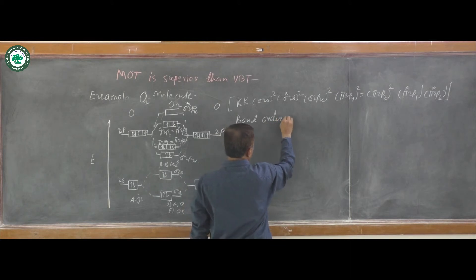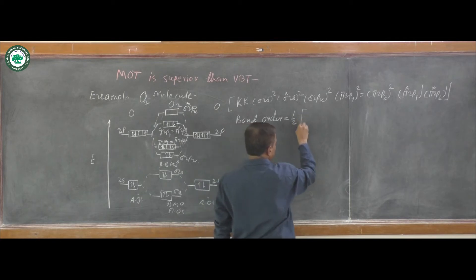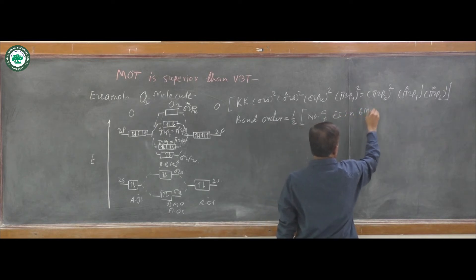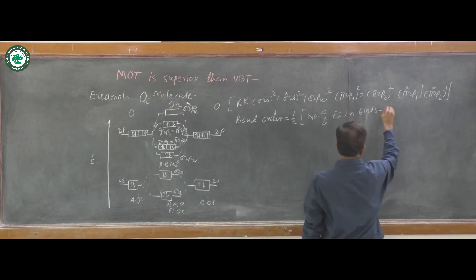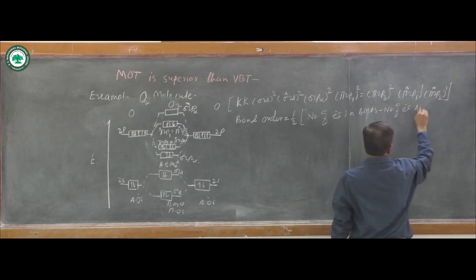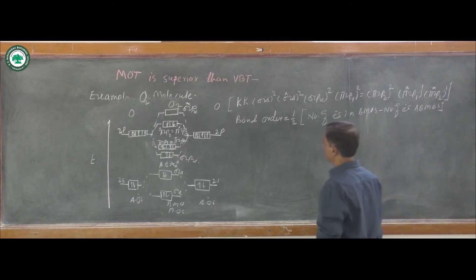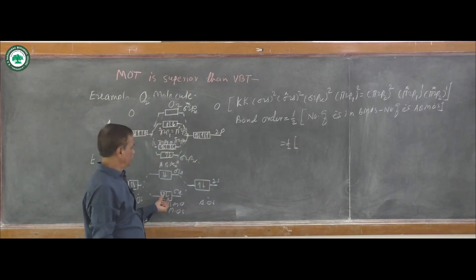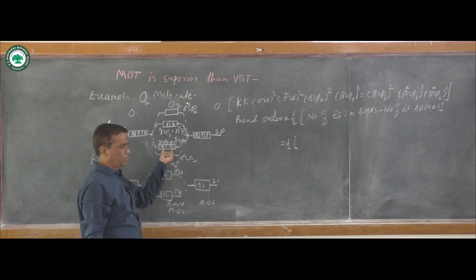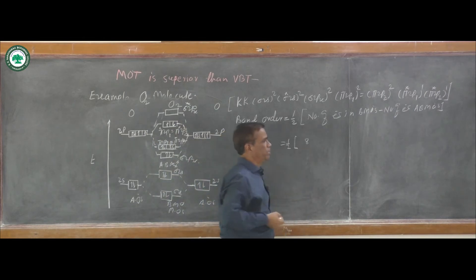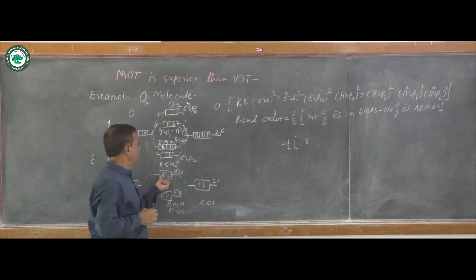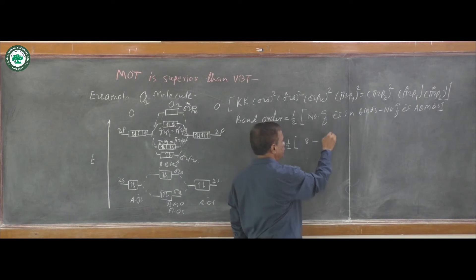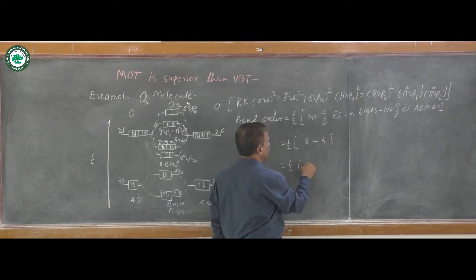Bond order equals one-half times the quantity: number of electrons in bonding molecular orbitals minus number of electrons in anti-bonding molecular orbitals. Electrons in bonding molecular orbitals: 2 + 2 + 4 = 8. Electrons in anti-bonding molecular orbitals: 2 + 2 = 4. Therefore bond order = one-half times (8 minus 4) = one-half times 4 = 2.